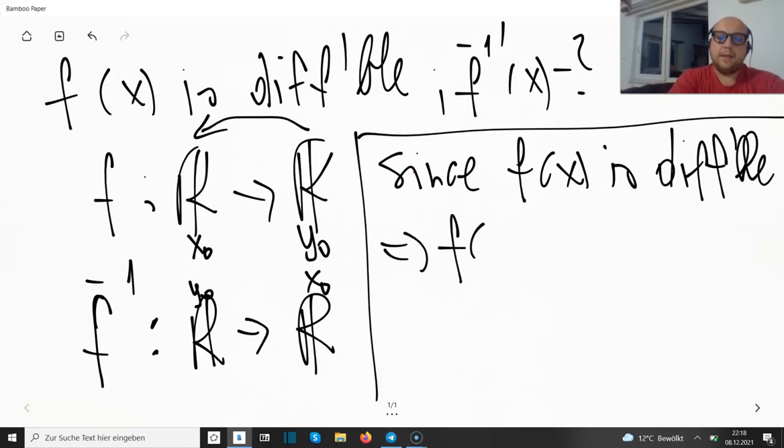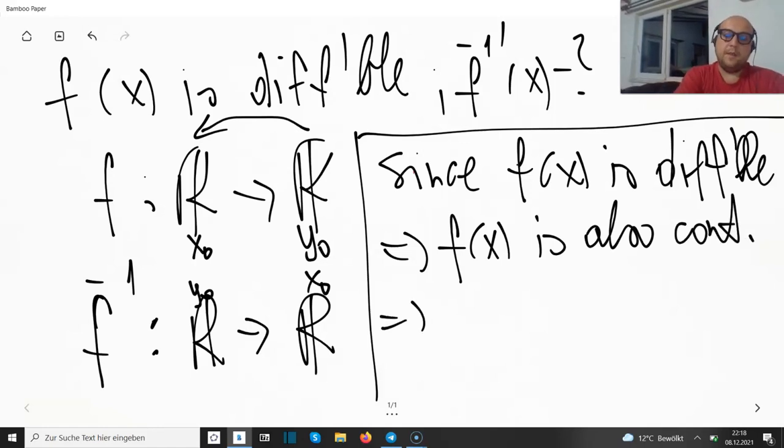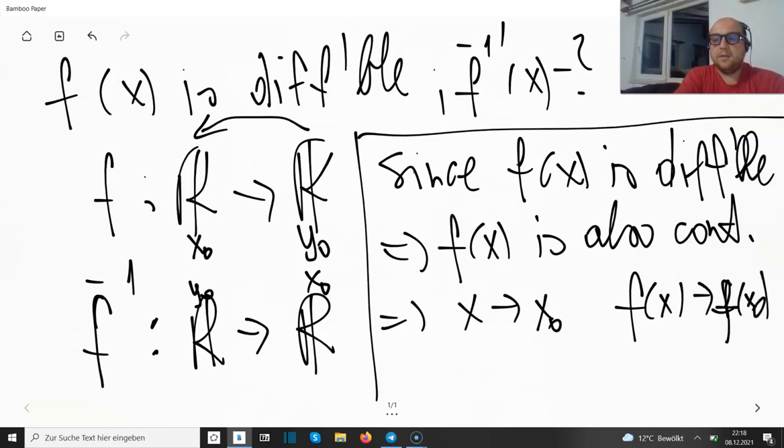Since f(x) is differentiable, f(x) is also continuous. And that means if we're dealing with x approaching x₀, then f(x) approaches f(x₀). You remember that this is the definition of continuity at one point.